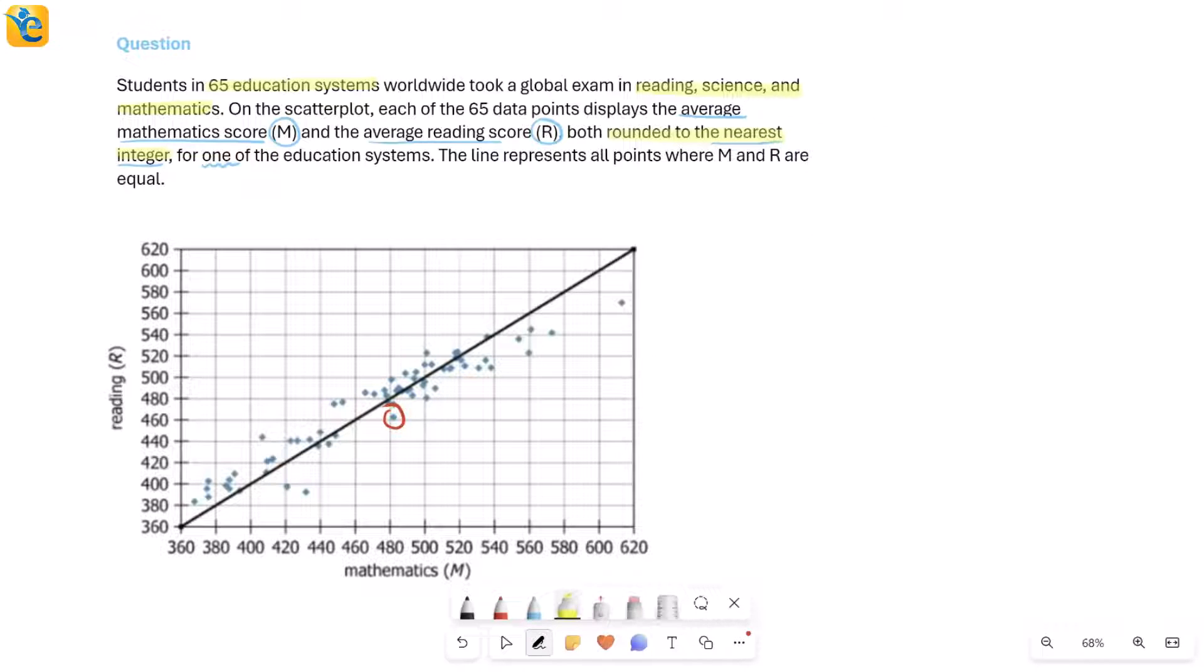Let's read further. The last part says something about the line that we see. It says the line represents all points where M and R are equal. So if I look at this line, I can see that it starts here at 360, 360. Then I can see it goes up till 620, 620. And any other point also, if I try to read on this, this is where I have 580 for X value, 580 for Y value.